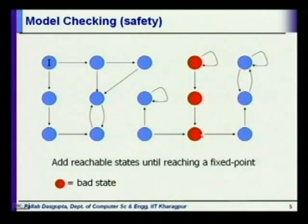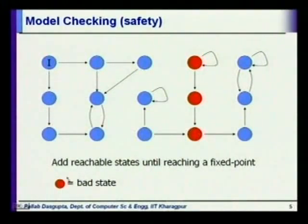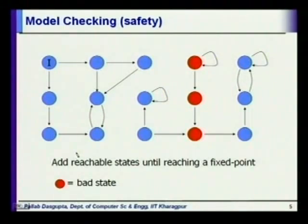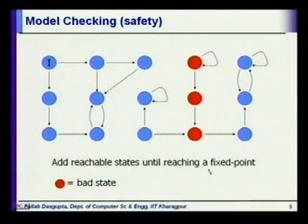Let us see what is the model checking problem for safety properties. We want to find out whether some violation of that property takes place. A safety property says that always something is going to hold, so you are trying to find some state where it does not hold. We start by adding reachable states, exploring the state space, and when we have exhausted the state space — only then can we say that the safety property holds. We add reachable states until we reach a fixed point. The problem here is that there are too many states to handle in practice, which is why we want to go for abstractions.